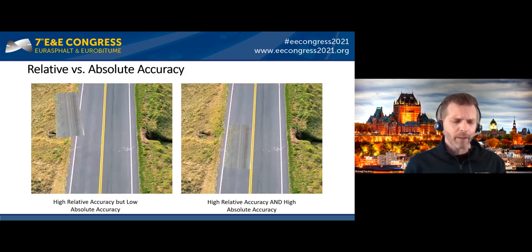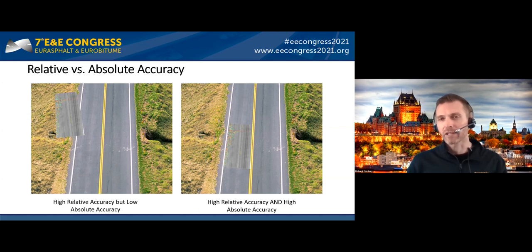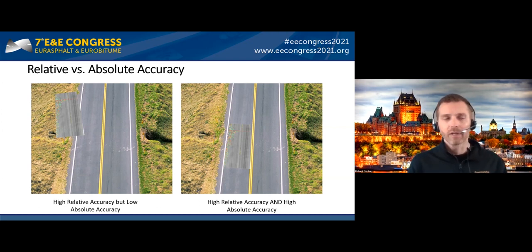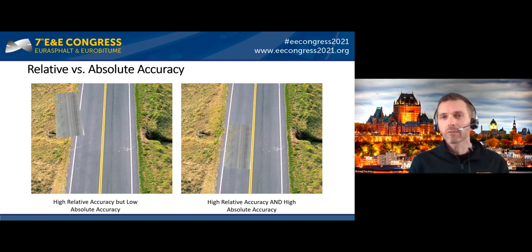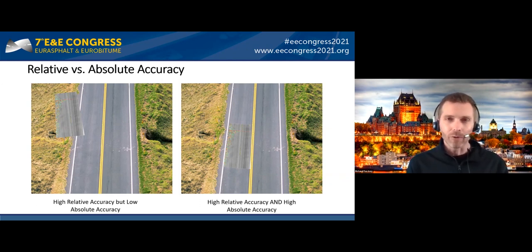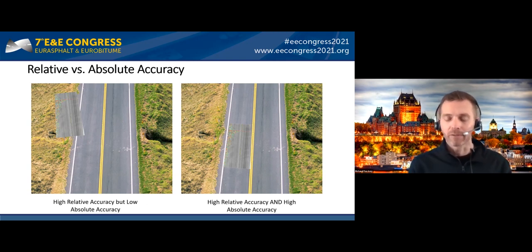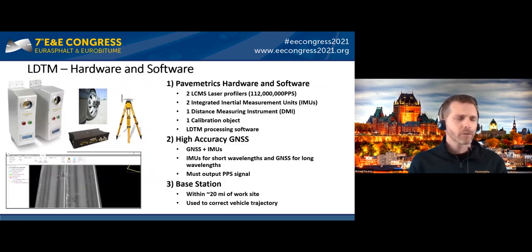Regarding relative versus absolute accuracy: high relative accuracy means you can measure position between two points accurately within millimeters, but the absolute position could be off by many meters. The LDTM system achieves both high relative and high absolute accuracy — the 3D scan is well-positioned on the road such that its measurement in relation to other real-world features is quite high. The technology uses 3D laser scan data from very high resolution scanners at about 112 million points per second, each with an inertial measurement unit, plus a wheel encoder for linear distance and a high accuracy GNSS.